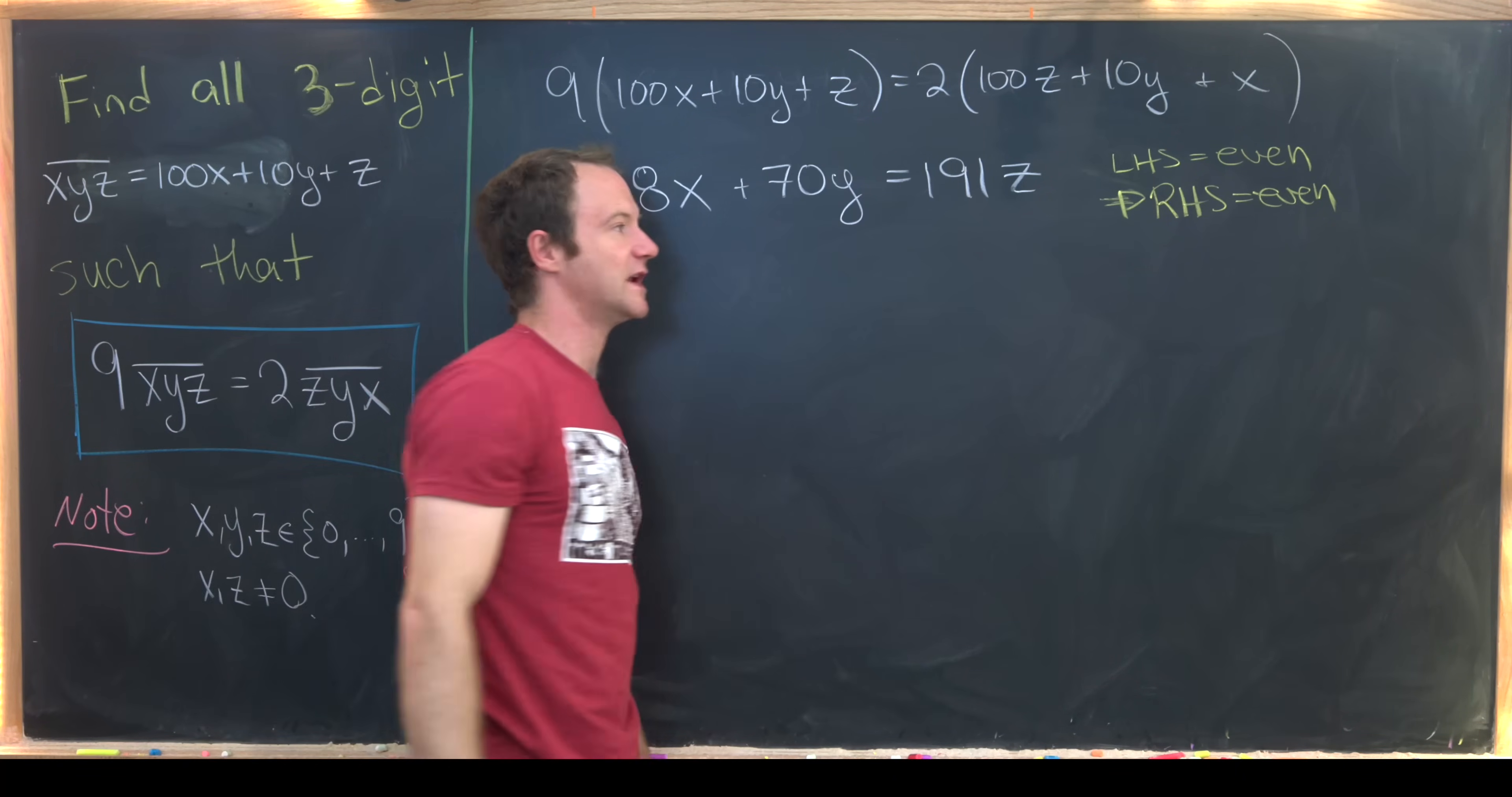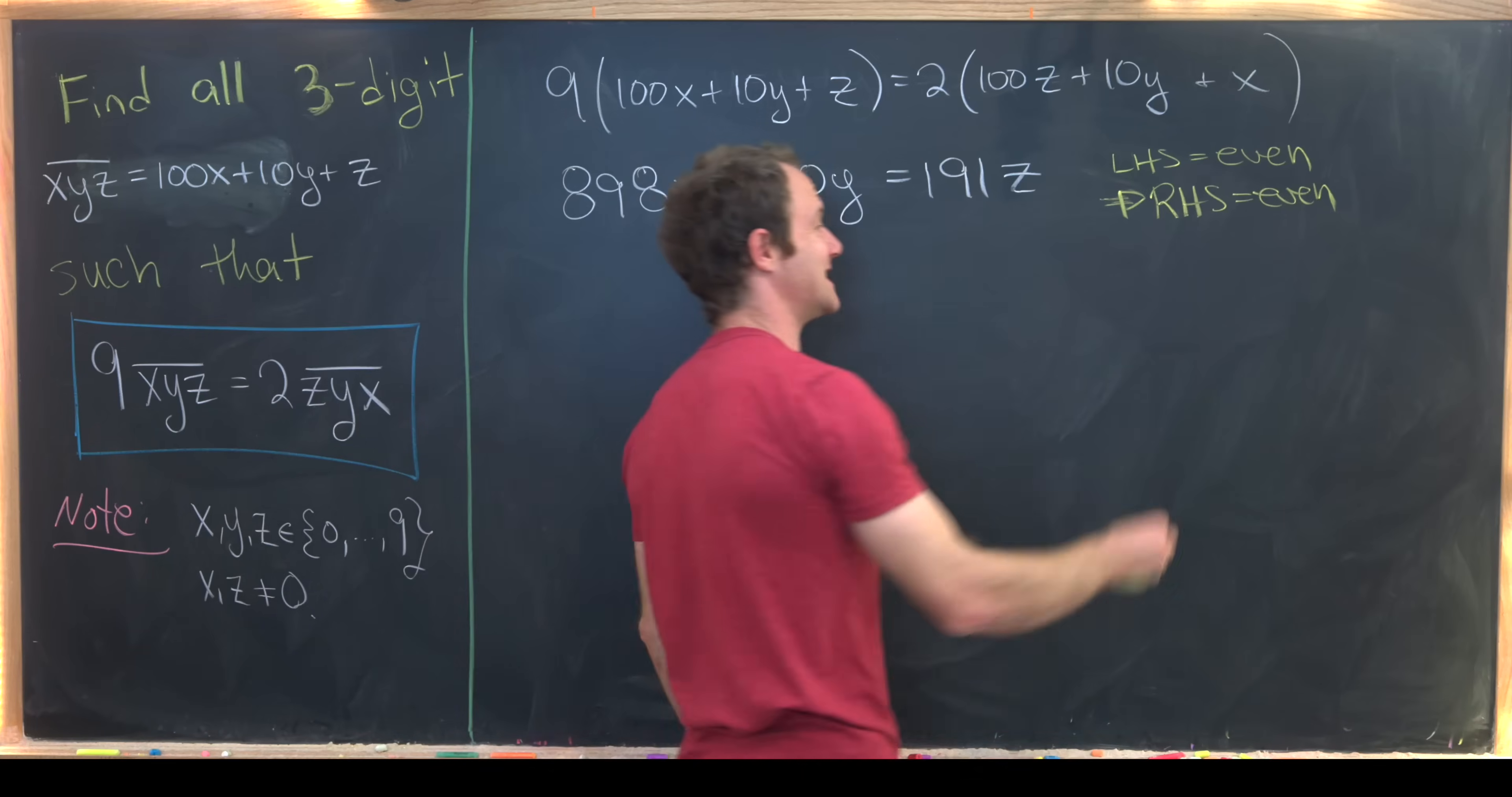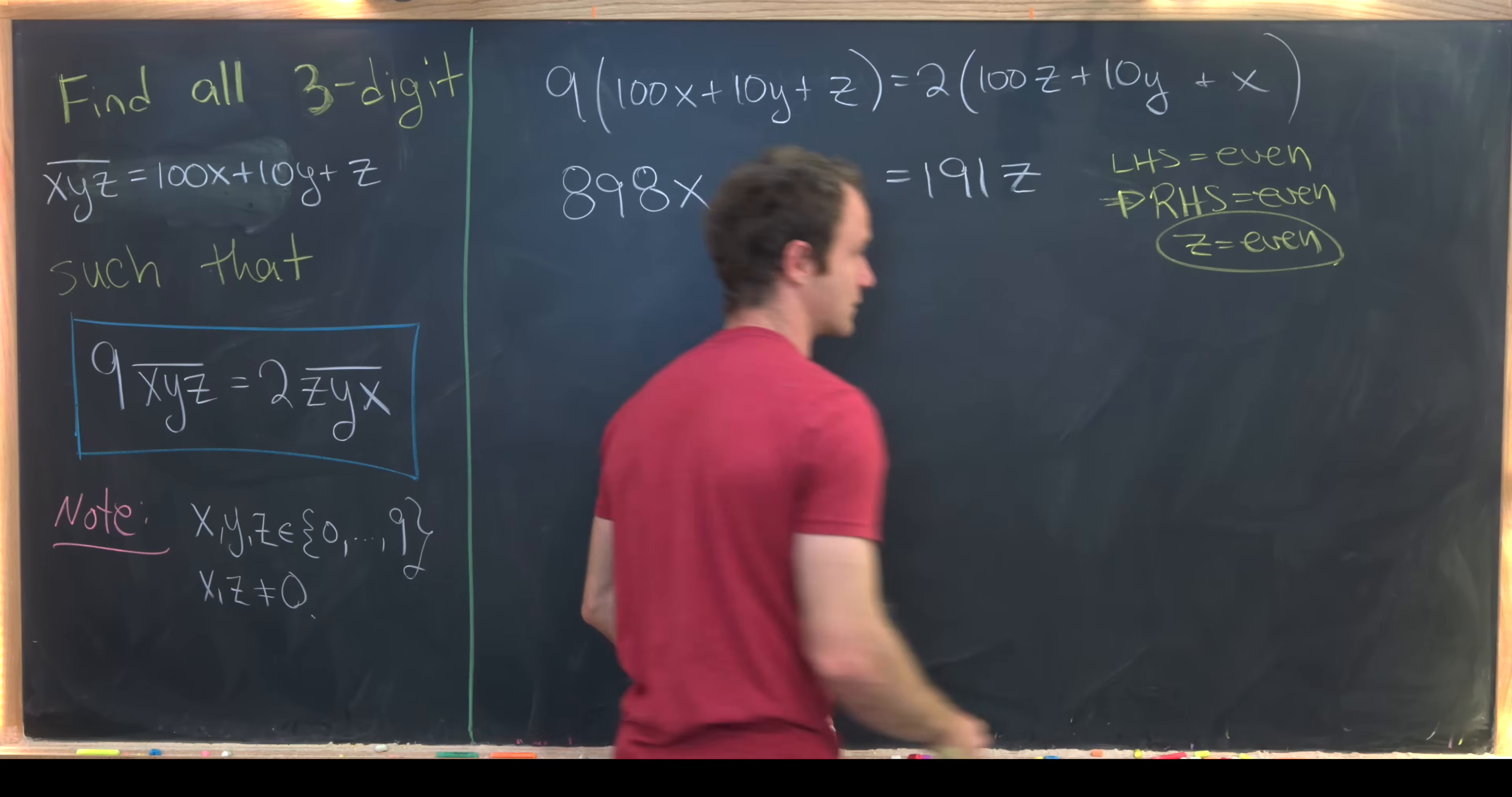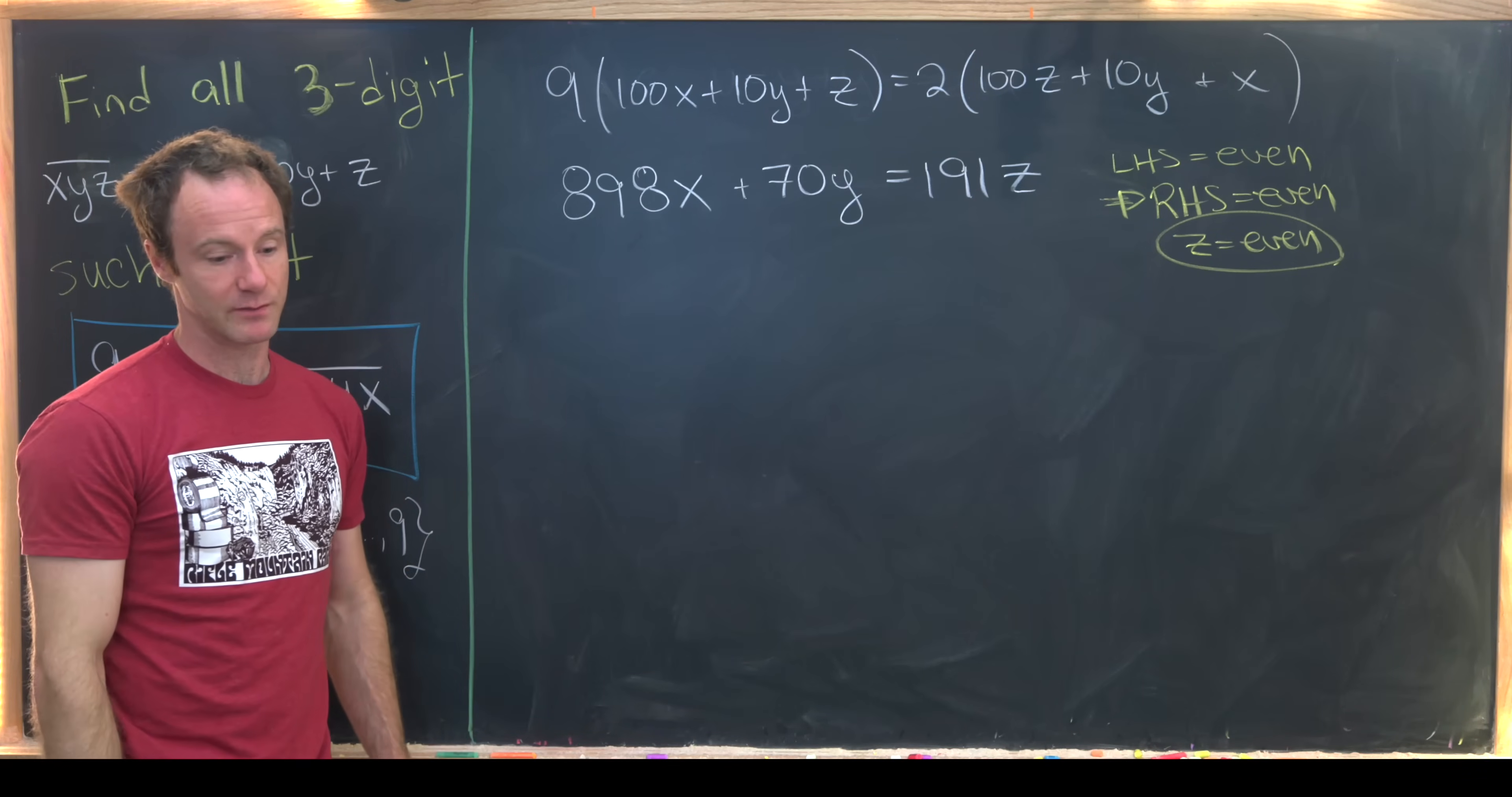But notice 191 is odd. That tells us that z must be even. Notice if z is odd that makes the right hand side odd and that would be a problem.